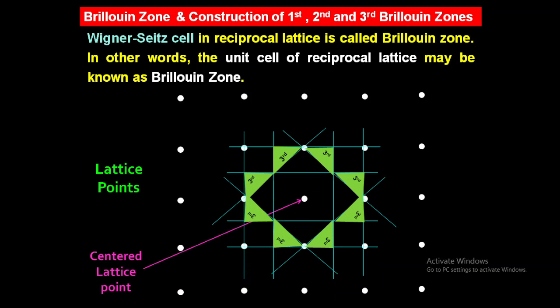The area enclosed between the second and third Bragg planes is nothing but the third Brillouin zone. This is the simple and easy process to construct Brillouin zones. We have studied the construction of the first, second, and third Brillouin zones. Thank you.